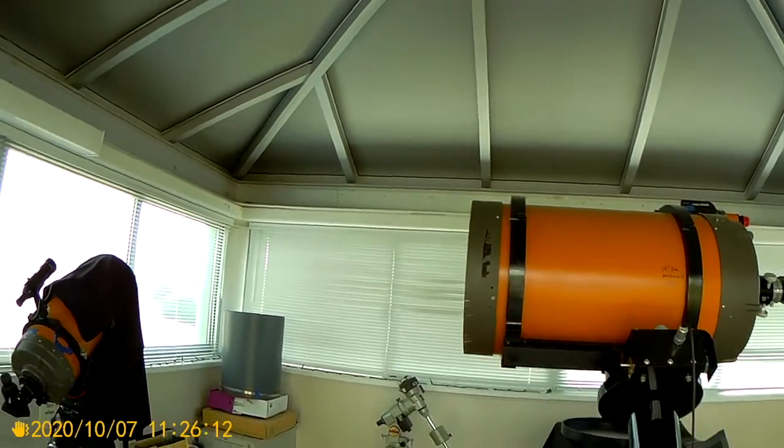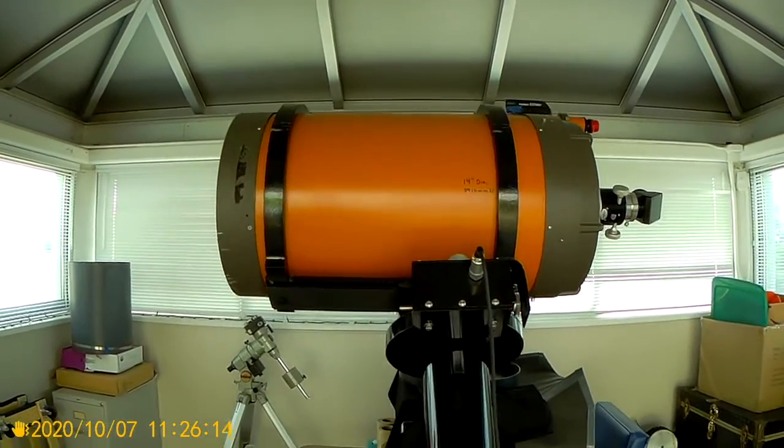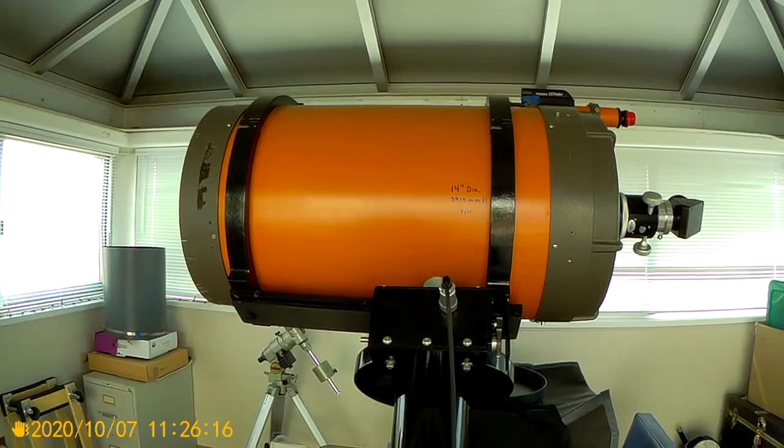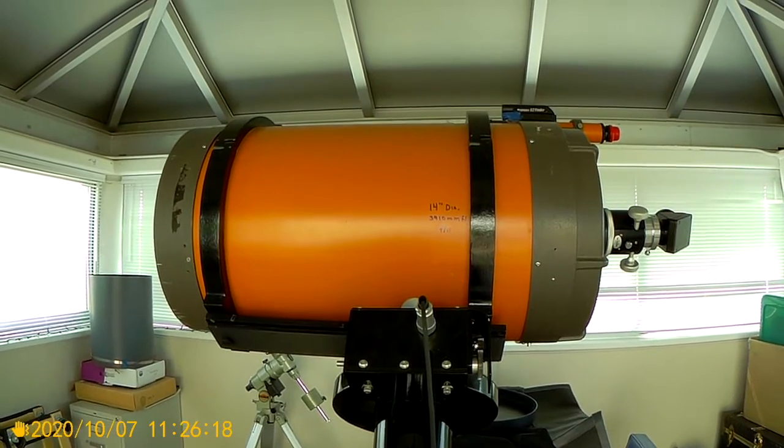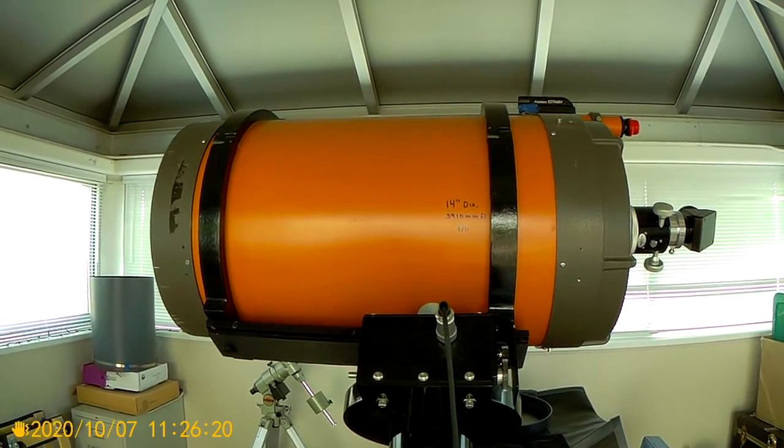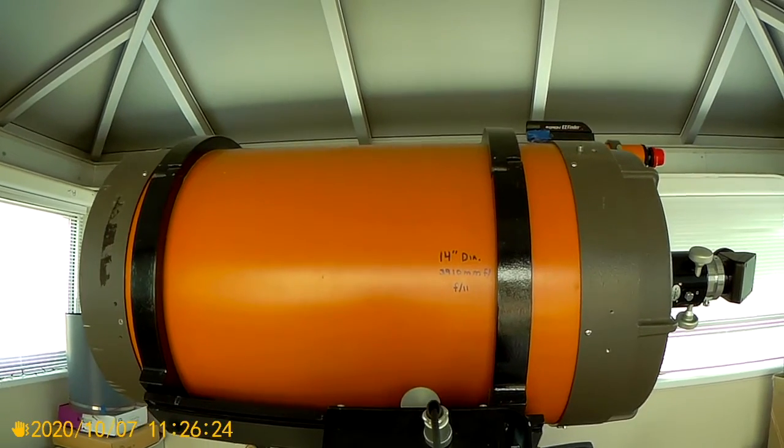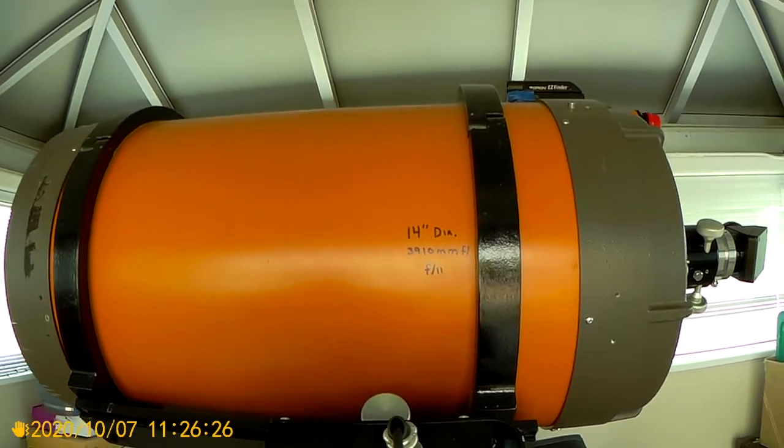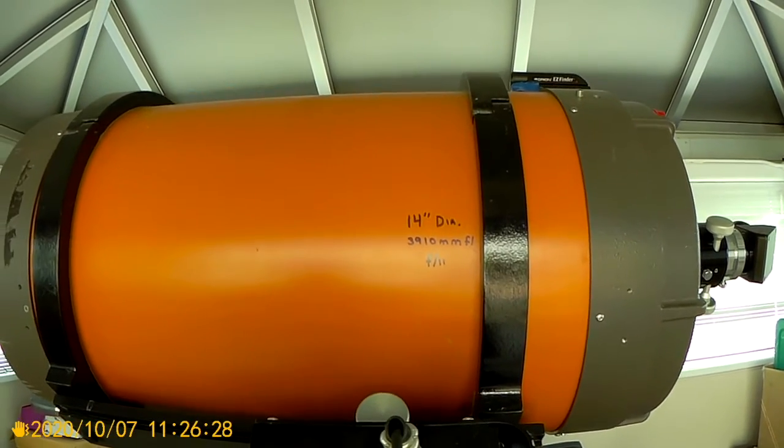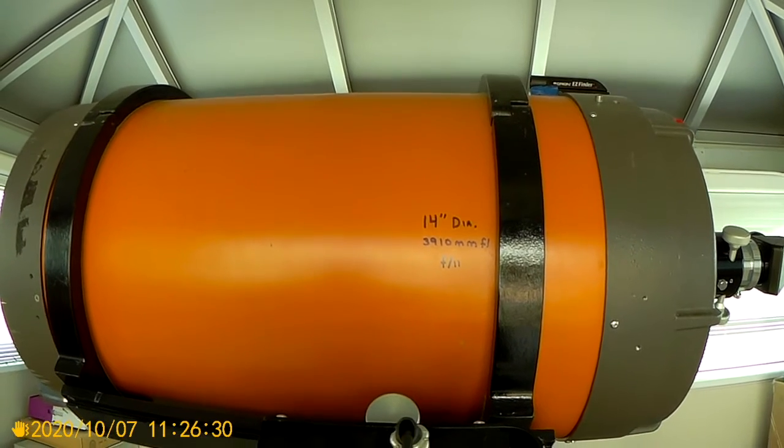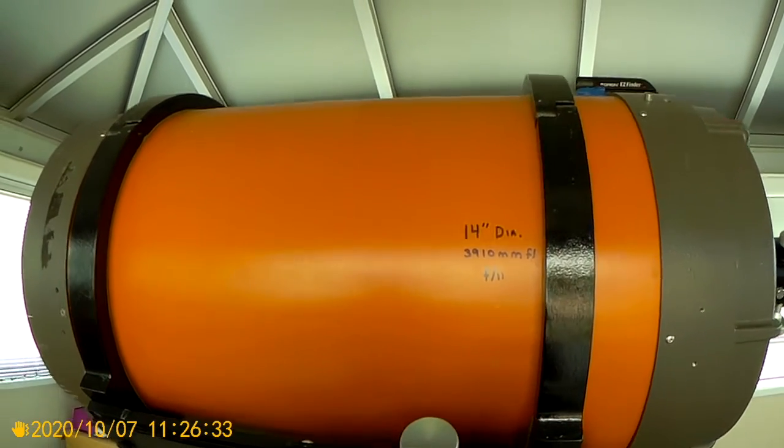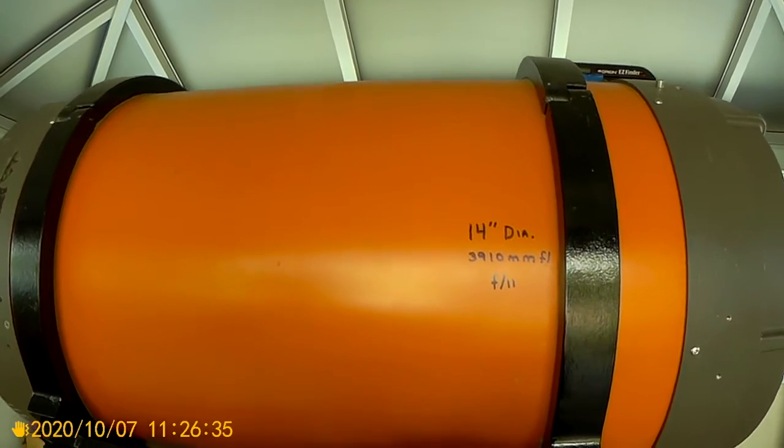But, back to the telescope here, what we have is a 14 inch Smith Castlegrain by Celestron. And the diameter is 14 inches. And the focal length is at 3,910 millimeters with a f11 ratio.